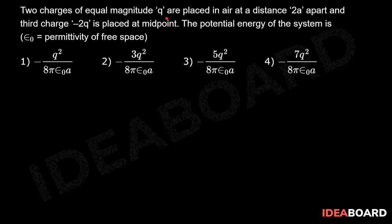Two charges of equal magnitude Q are placed in air at a distance 2A apart, and a third charge minus 2Q is placed at the midpoint. The potential energy of the system is to be found, where epsilon_0 is the permittivity of free space.